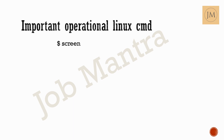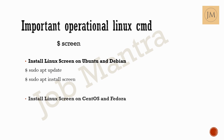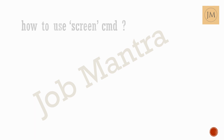The screen package is usually pre-installed on most Linux operating systems. You can check it with the command 'screen --version', which gives you the version number of the screen utility. If you don't have screen installed, you can install it on Ubuntu and Debian using the apt package manager, or on CentOS and Fedora using the yum package manager.